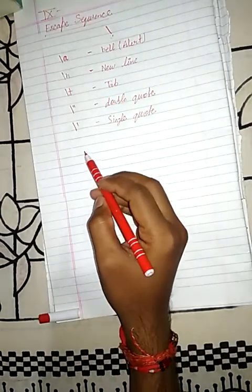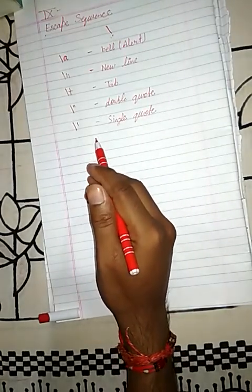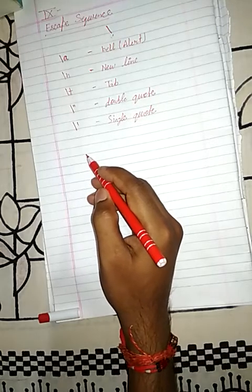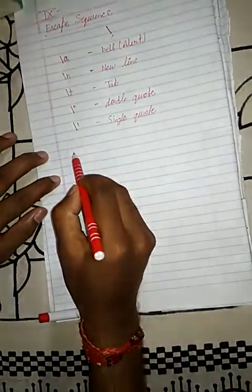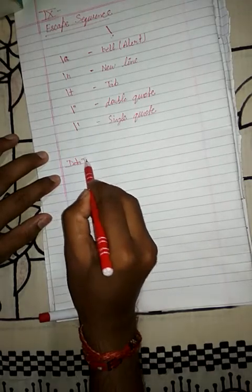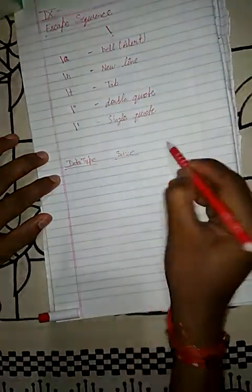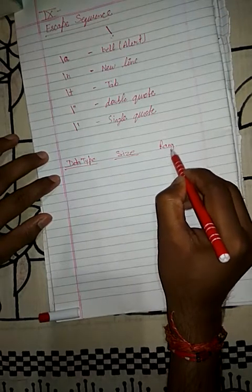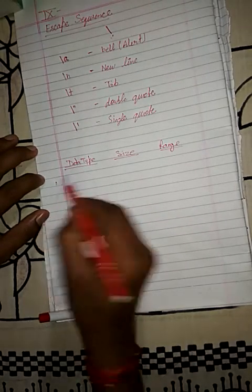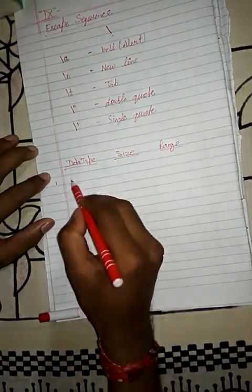I am going to tell you about the size and range of primitive data types using a table. Let me write the table. You will need these three points: the data type, the size, and the range. These are the very famous data types we are going to cover.